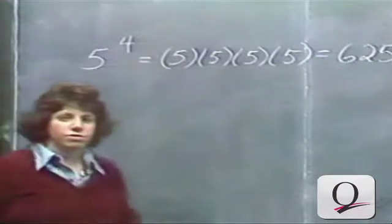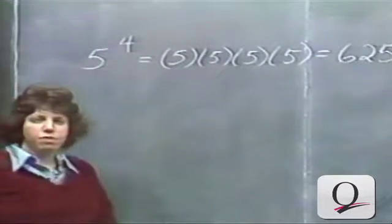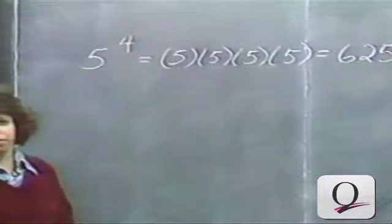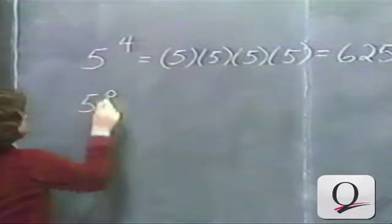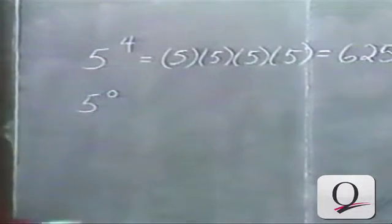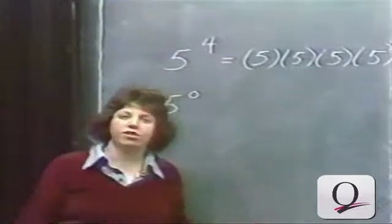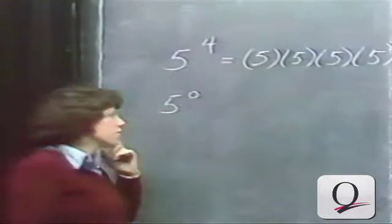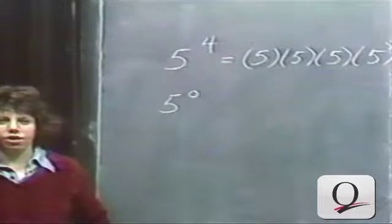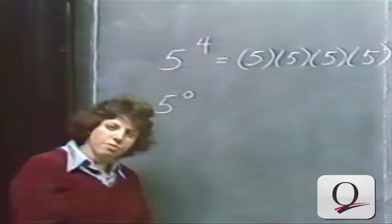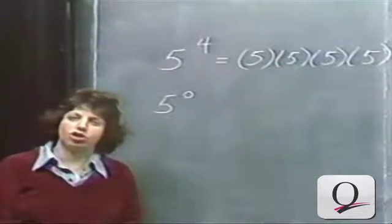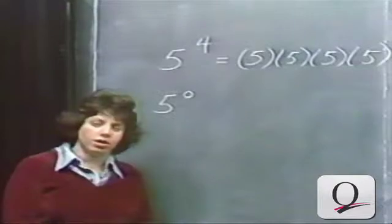Now it will be useful for us to expand our idea of exponents to include zero and negative exponents. But the question is, how should we define these exponents? What will we mean by something like 5 to the zero power? It doesn't make any sense to say we're going to write 5 down as a factor 0 times, so we just can't rely on our intuition in this case.